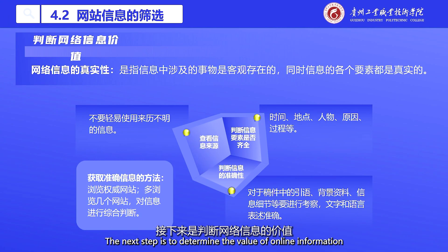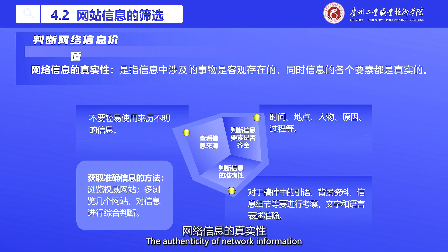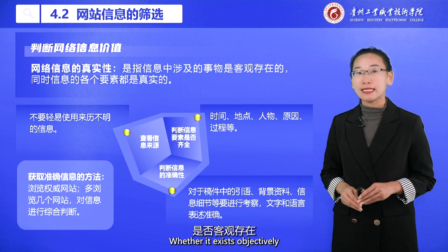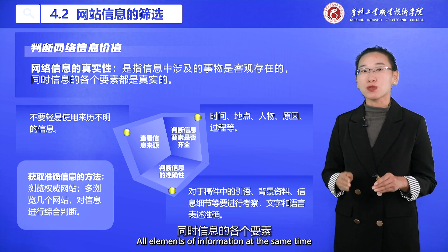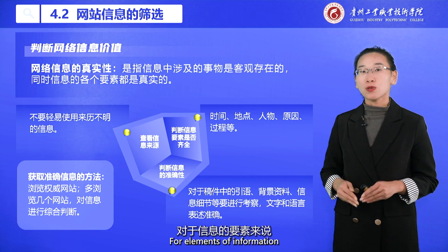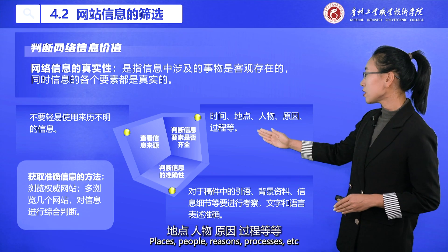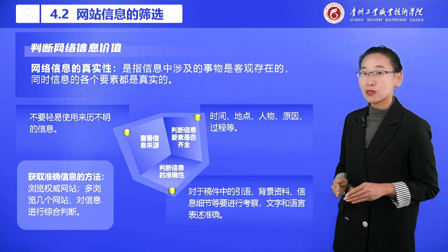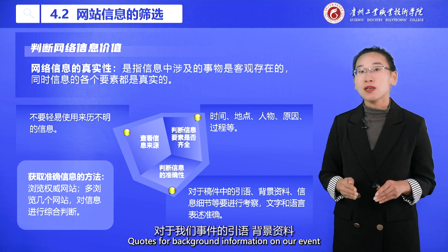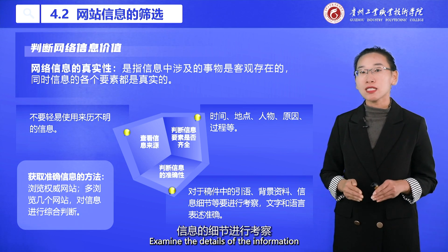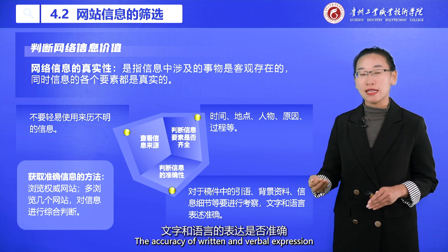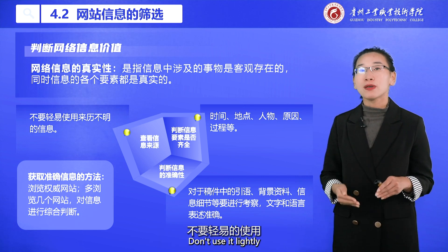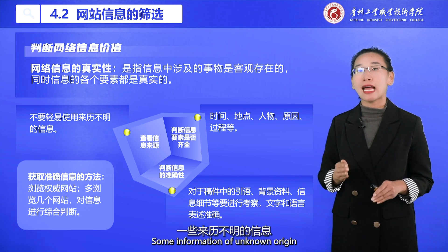The next step is to determine the value of online information. The authenticity of network information refers to whether the things involved in the information exist objectively, and whether all elements of the information are true. The elements of information include time, tool, places, people, reasons, processes, and so on. For accuracy, we should examine background information quotes related to the event, examine the details of the information, and check the accuracy of written and verbal expression. We should also look at the source of the information and not lightly use information of unknown origin.